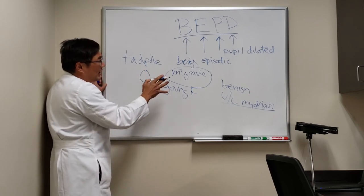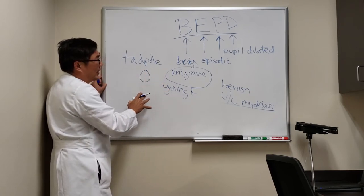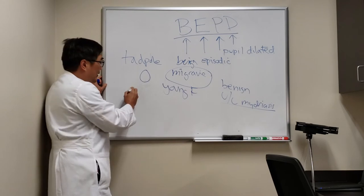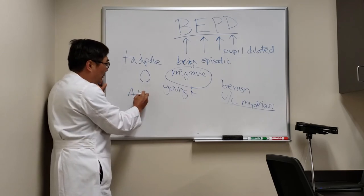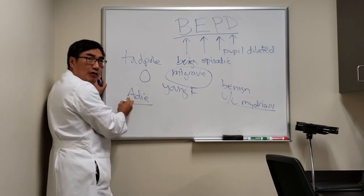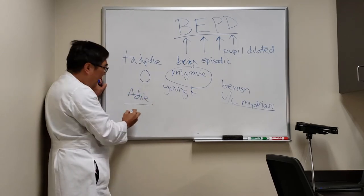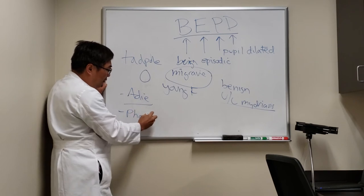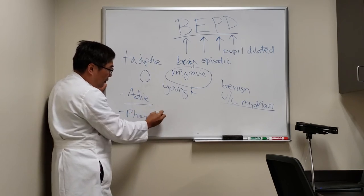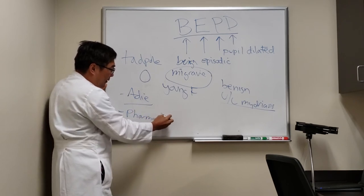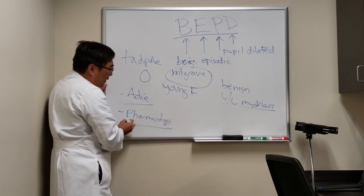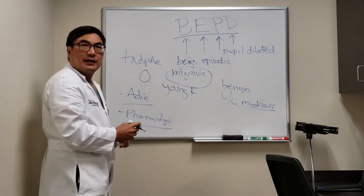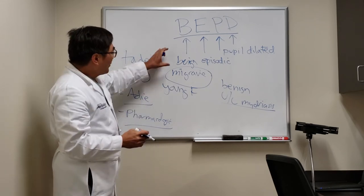The differential is between a tonic pupil, which normally would not come and go, and pharmacologic dilation, either on purpose or by accident. Either way, these are all benign.